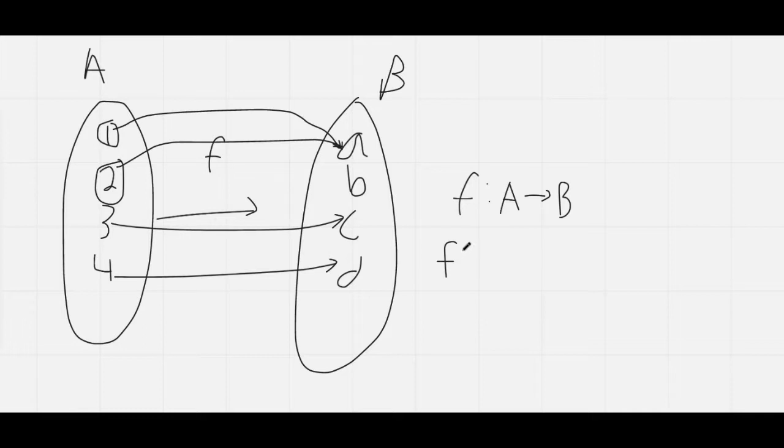So in function notation we'll say that F, and then parentheses, we'll say F of 1 is equal to A. And F of 2 is also equal to A. And so on. This is how we would write it.